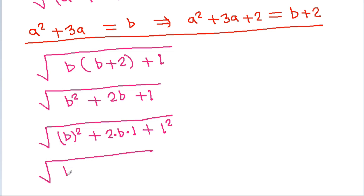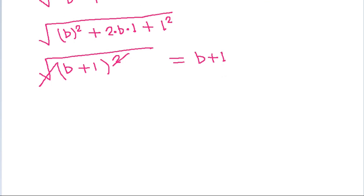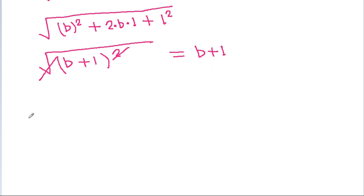Taking the square root, this becomes b plus 1. And since b is a squared plus 3a, b plus 1 will be equal to a squared plus 3a plus 1.